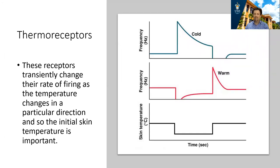Thermoreceptors are extremely rapidly adapting. Imagine jumping into a cold shower — those first few seconds can be quite alarming, and you might want to jump out. But if you survive the first few seconds, pretty soon you adapt. The same is true for warmer temperatures. Because temperature is so rapidly adapting, it provides information about changes in intensity. If you put your hand in a bucket of cold water and then transfer it into lukewarm water, the lukewarm water will feel a lot warmer than it possibly is. This is a result of just-noticeable-difference principles.